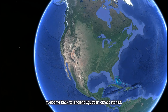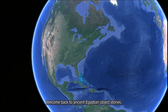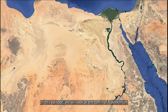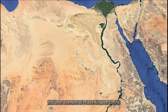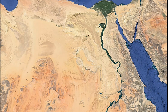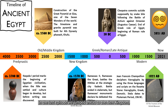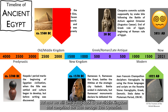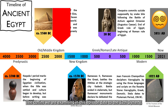Welcome back to Ancient Egyptian Object Stories. In this episode, we will look at the coffin of Nachtknum and other examples of Middle Kingdom coffins. In the last episode, we jumped ahead to the New Kingdom, but now we will take a step back to the Middle Kingdom, which comprised the 11th through 13th dynasties. The coffins we are examining in this episode date to the 12th dynasty, during one of the heights of Egyptian art.